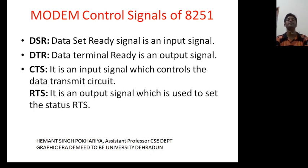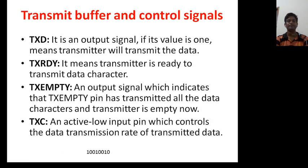CTS, it is an input signal which controls the data transmit circuit. RTS, it is an output signal which is used to set the status RTS.